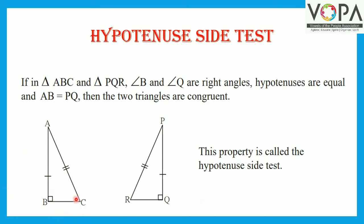In triangle ABC, angle B is 90 degrees, so side AC is the hypotenuse. In triangle PQR, angle Q is 90 degrees, so PR is the hypotenuse. In these two triangles, hypotenuse AC of triangle ABC and hypotenuse PR of triangle PQR are congruent. And one side — side AB of triangle ABC and side PQ of triangle PQR — are also congruent. That means the hypotenuse and one side of one triangle are congruent with the hypotenuse and one side of the other triangle. Therefore, these two triangles are congruent by the Hypotenuse-Side test.